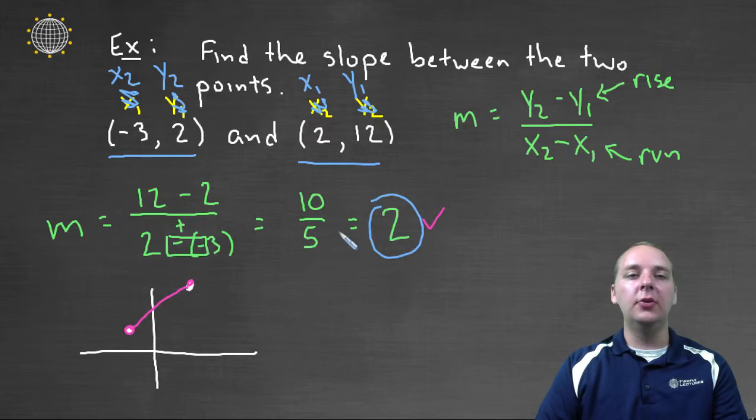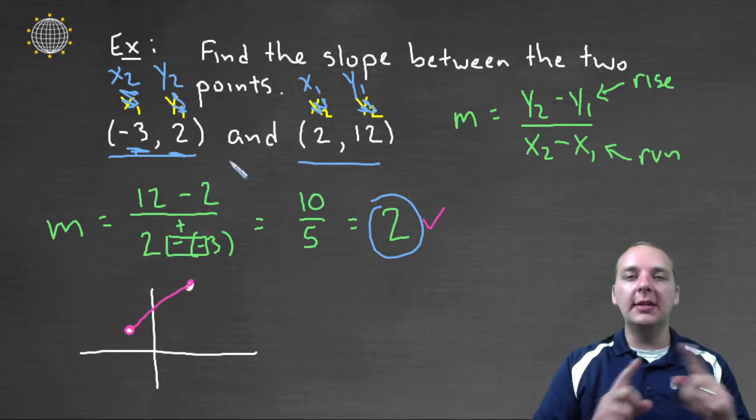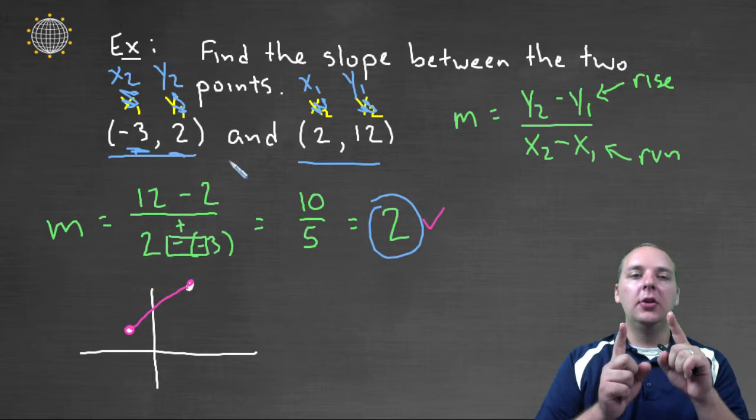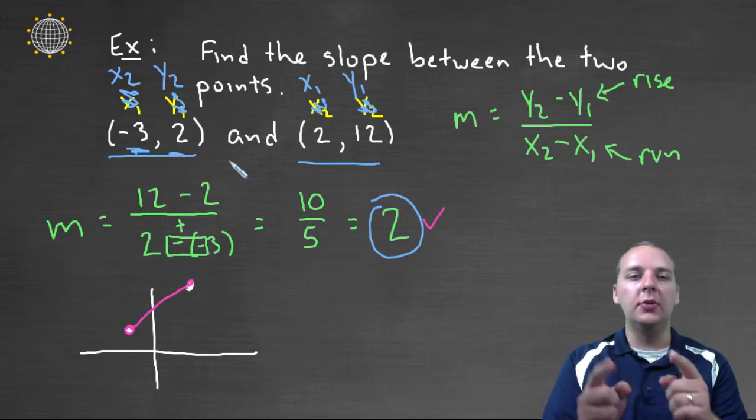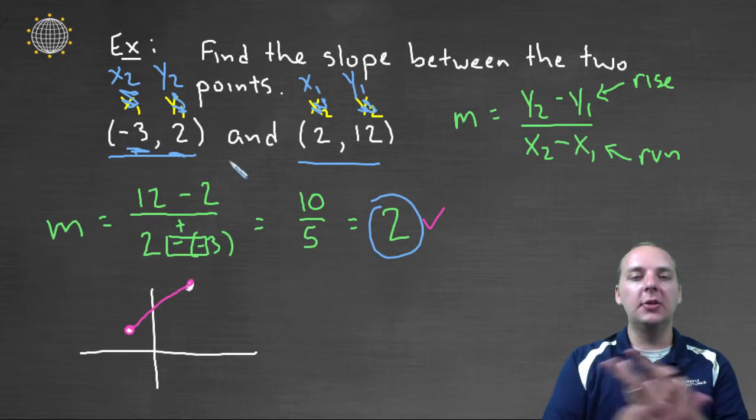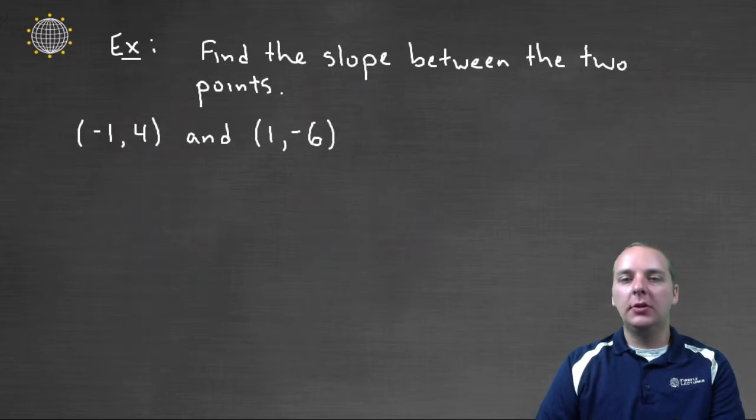The only thing you can't do is you can't call this x-one but this y-two, and vice versa. You can't mix and match the ones and the twos. They're either x-one, y-one, or they're x-two, y-two. But as long as you do that, it doesn't matter which point you list first, you'll get the same answer either way. Let's try another example.